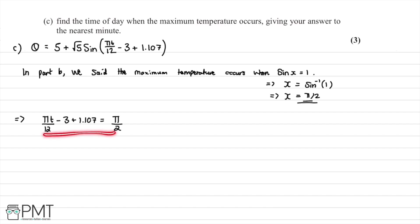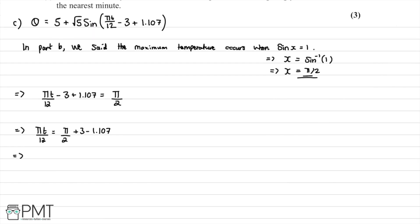Rearranging, pi t over 12 equals pi over 2 plus 3 minus 1.107. Multiplying everything by 12 and dividing by pi, we get T equals 12 times (pi over 2 plus 3 minus 1.107) all divided by pi. Putting this into the calculator gives T equal to 13.2 hours.